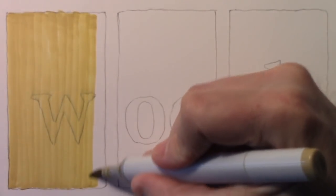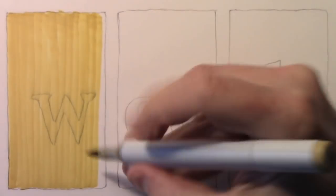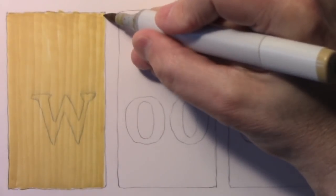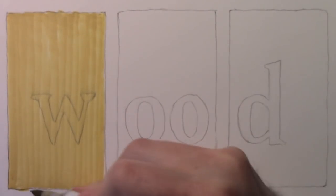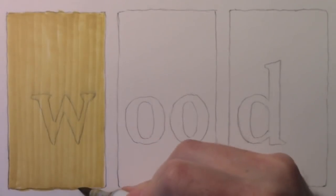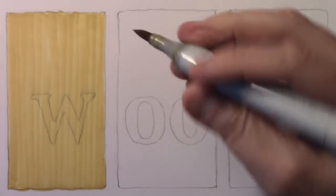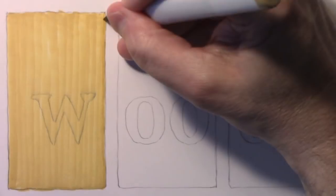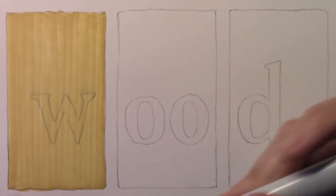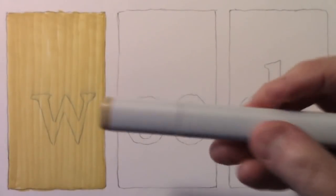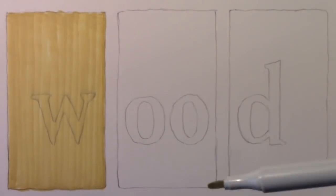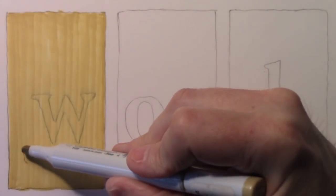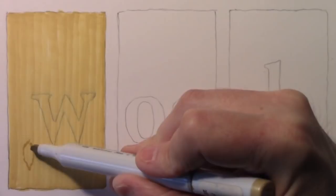But you can begin by just putting a base layer, keep that marker moving fairly quickly because that keeps the color light. And then what I'm going to do now with the same marker is start to add detail, but I'm going to use the other tip. Hopefully you have a marker that has two different tips. Now I flipped around to this chisel point, which allows me to get a little more detail.